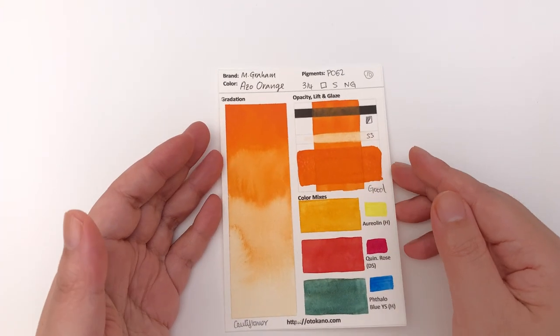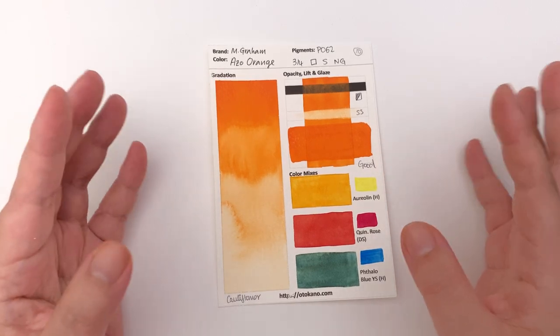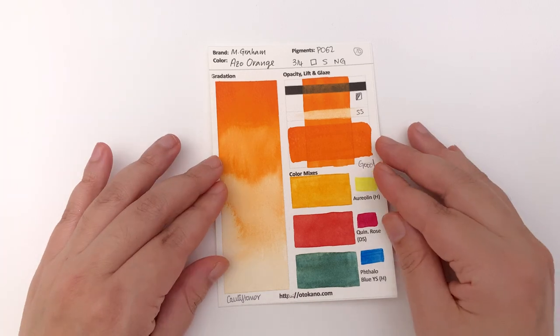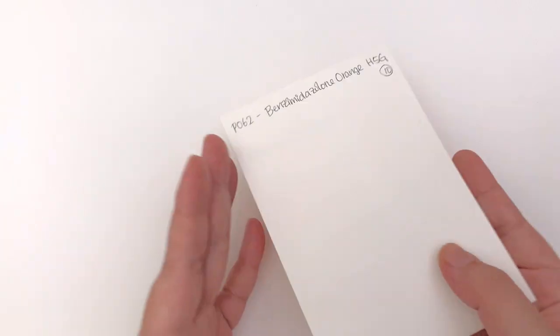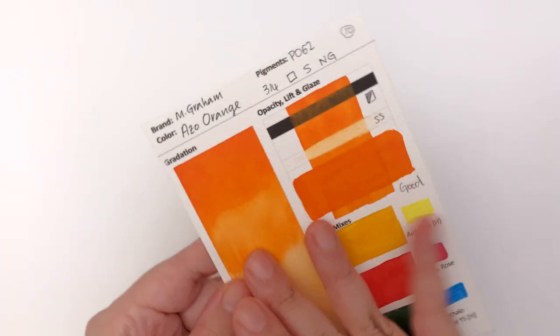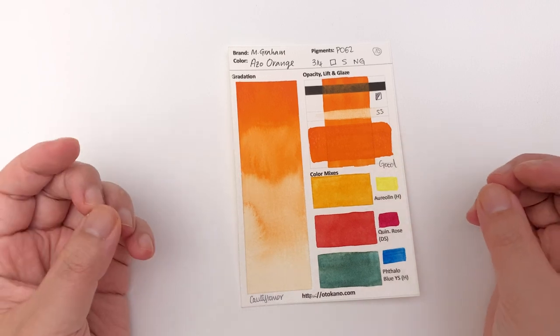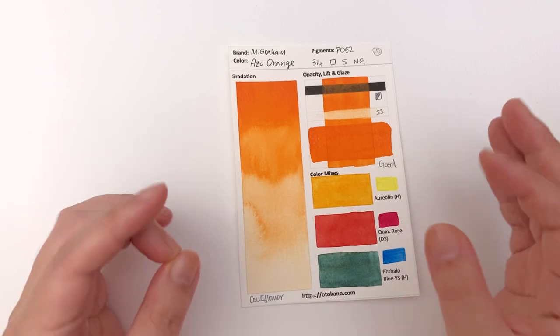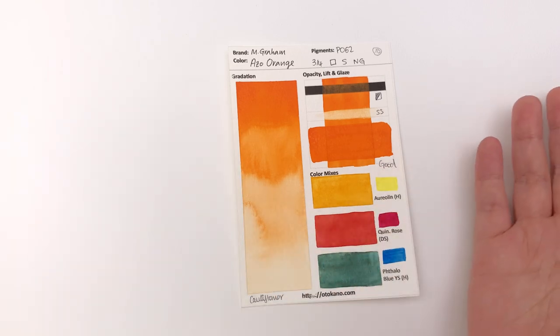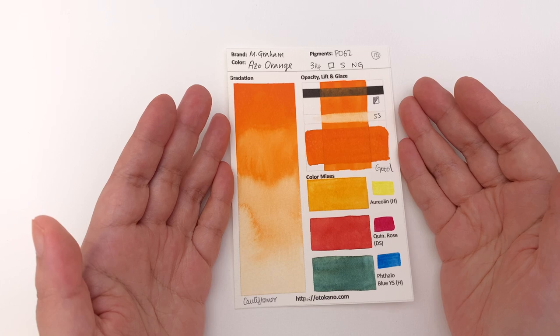And then finally for this video we have the azo orange and we are definitely stepping into the bright orange territory here. It is made with PO62 which is the benzimidazolone orange H5G and it's an intense medium orange in that it's not too yellowy, it's not too red. So if you're looking for a nice middle orange then this is a great choice.